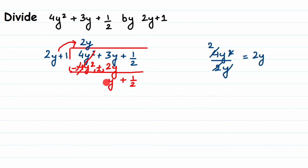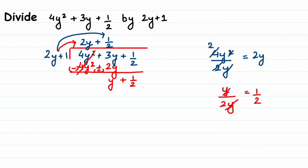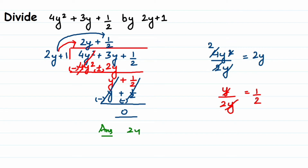To find the next quotient term, divide the first term of the new dividend by the first term of the divisor: y divided by 2y. Cancel the y to get one-half, so write down plus one-half in the quotient. Now multiply 2y plus 1 by one-half: 2y times one-half is y, and 1 times one-half is one-half. Change the signs, cancel both terms, and we get remainder equal to zero. So the answer is 2y plus one-half.